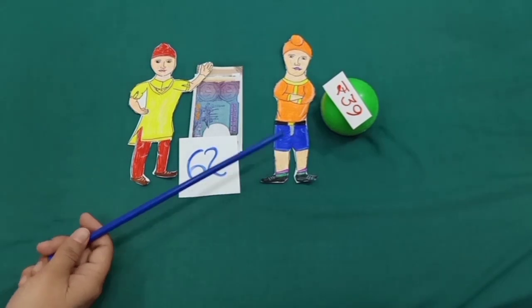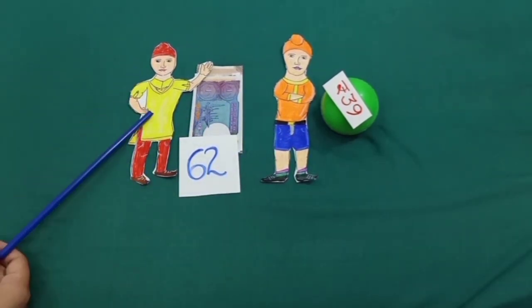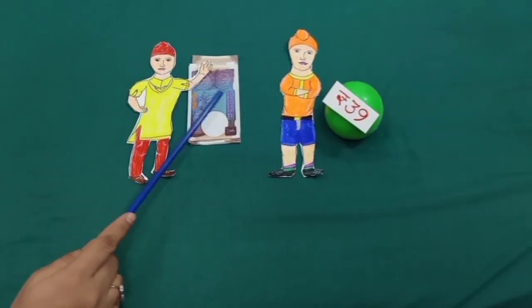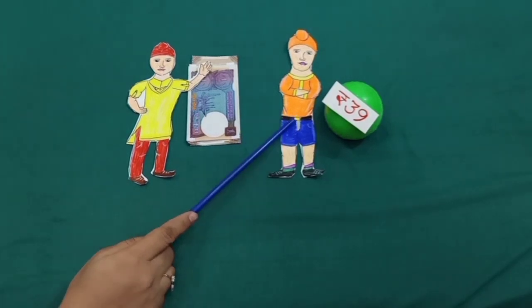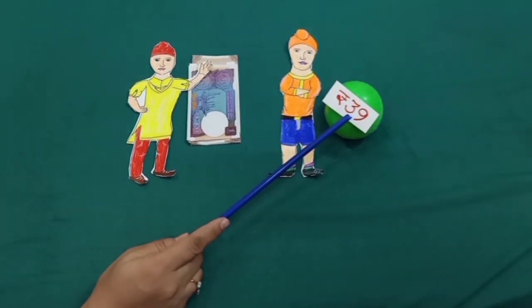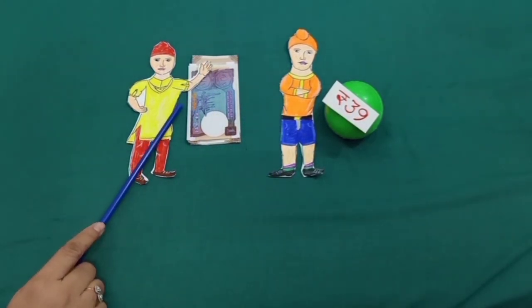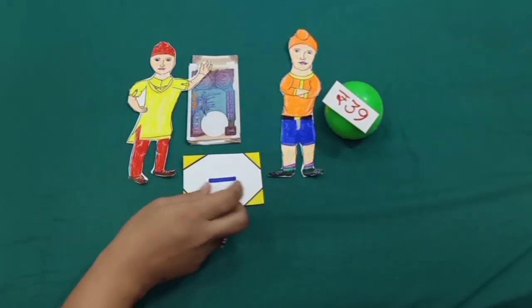So Prince asked his brother Puneet to get a ball for him. When Puneet gave money to Prince to buy a ball, that is rupees 39, Puneet's money became less than earlier, and less means subtraction.